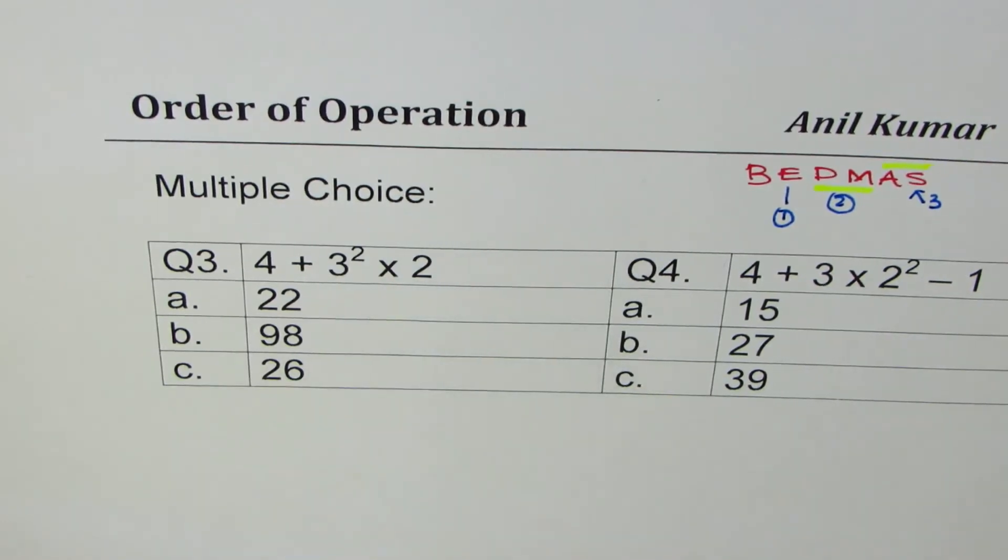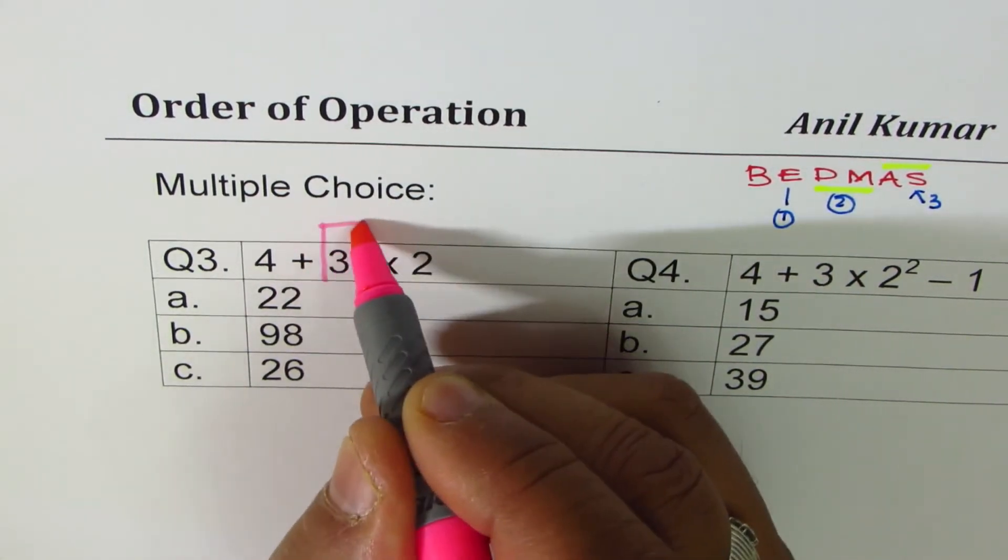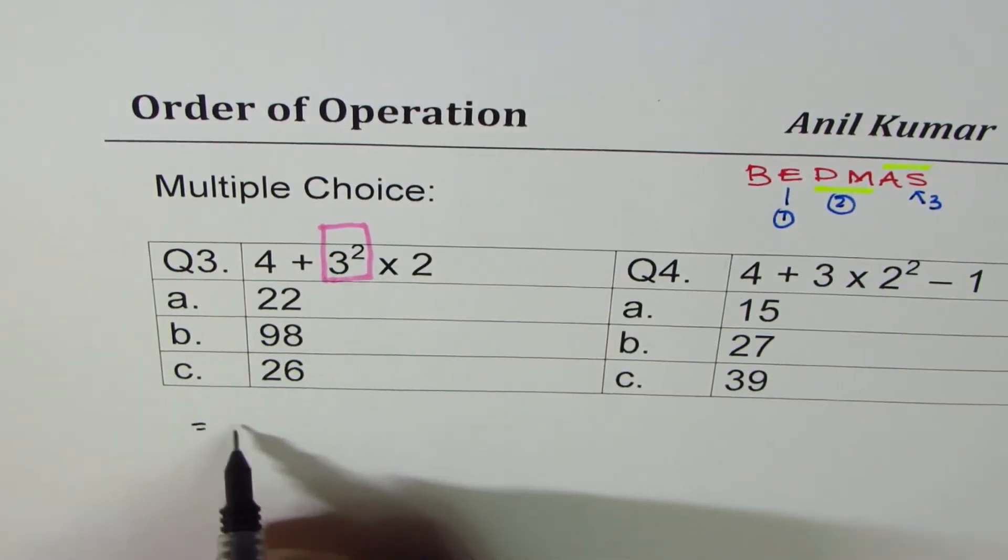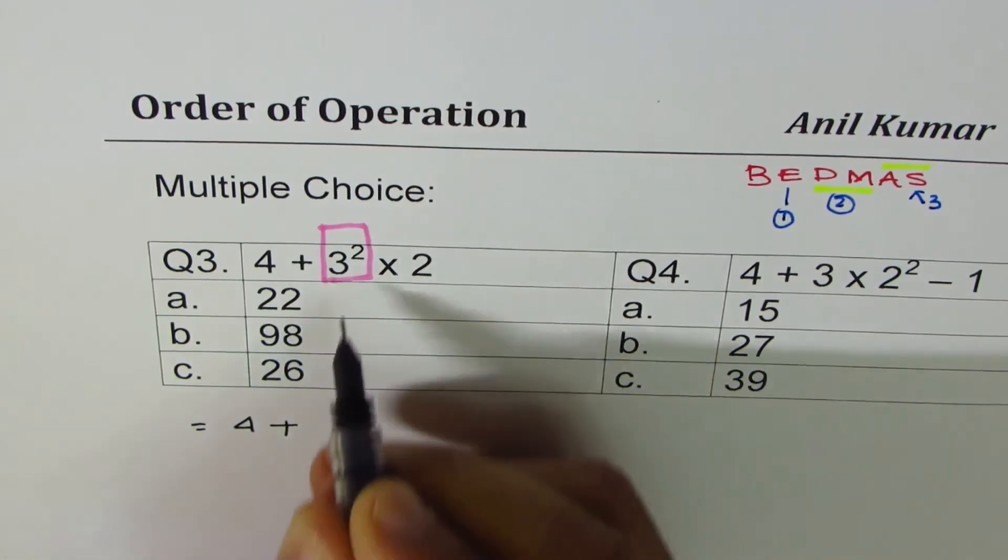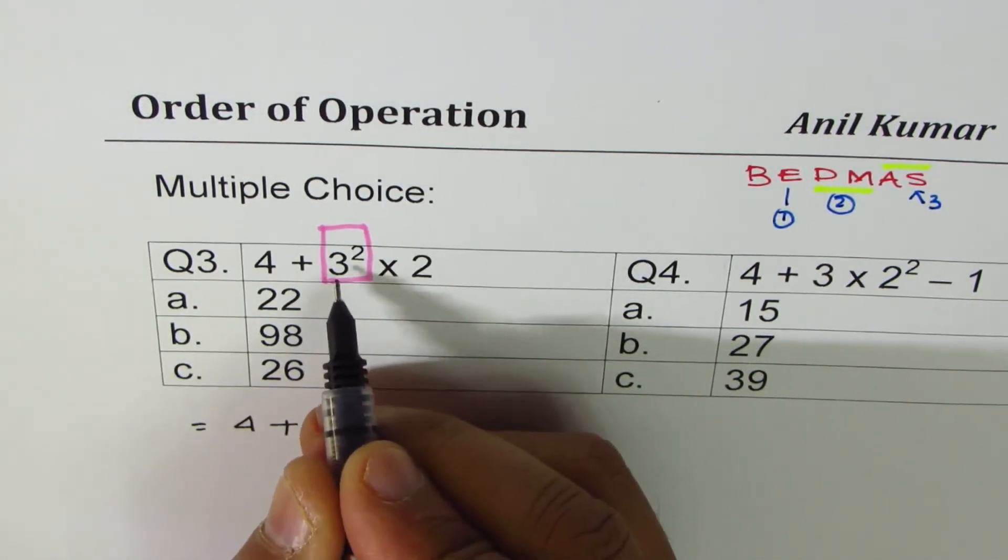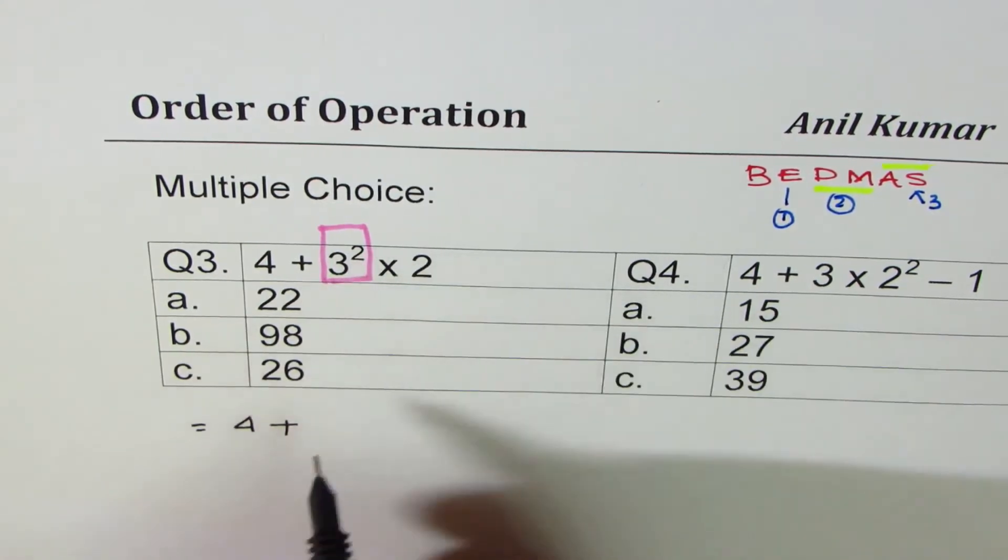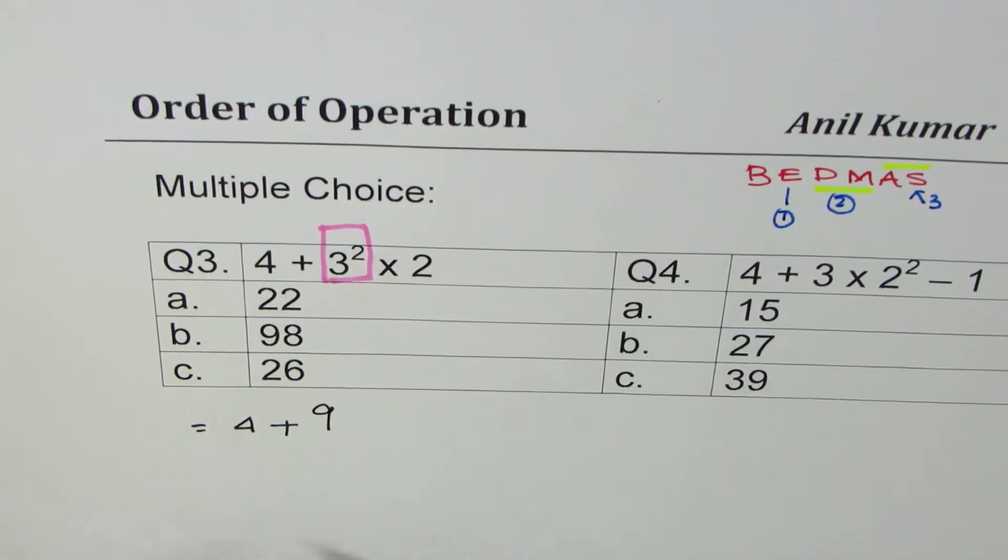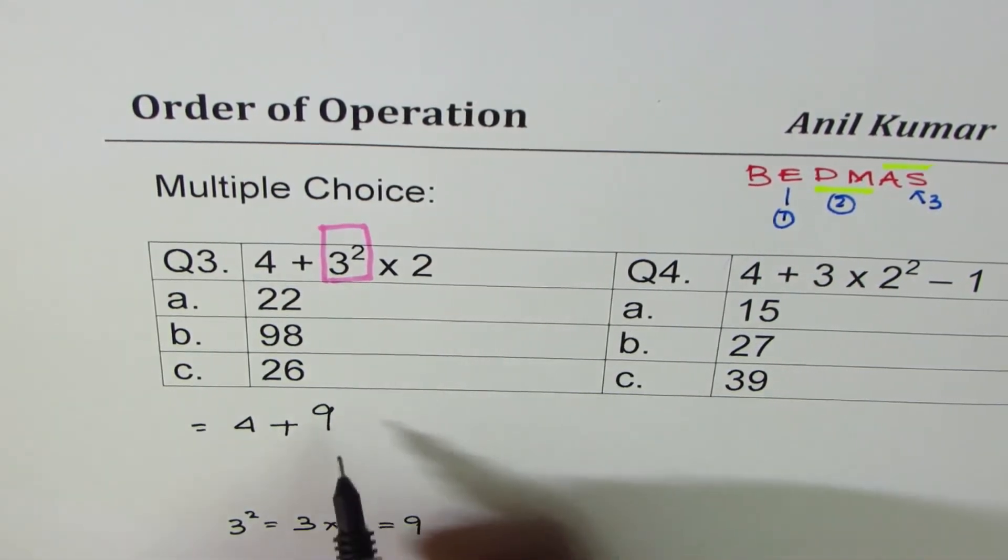In this case, what should you do first? The first operation for us is to do square of 3. So the solution for question 3 will be: 4 plus what is square of 3? That means 3 times 3, not 3 plus 3, not 3 times 2 also. 3 squared is 3 times 3 which is 9. So put 9 here.